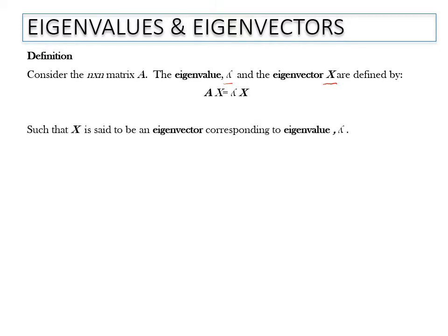X is said to be an eigenvector corresponding to eigenvalue lambda. So if there are 3 lambdas, meaning there are 3 eigenvectors X corresponding to those lambdas.